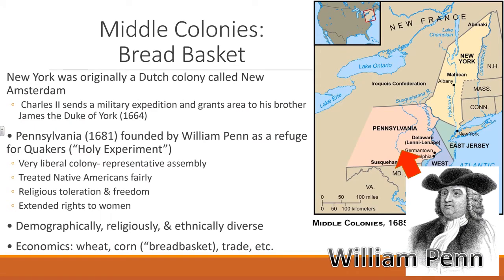We started with the Chesapeake and Southern last time, then New England — now we're in the middle colonies. Geographically speaking, that's New York, Pennsylvania, and New Jersey. We call these the breadbasket of the colonies, meaning this is where most of our grain is produced. One characteristic that makes them different from the rest is that, yes, they're the breadbasket, but also they are a very diverse group of people.